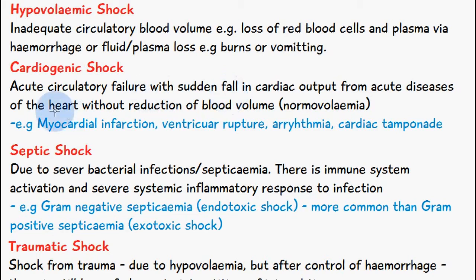Another type is cardiogenic shock, which is a form of acute circulatory failure with a sudden fall in cardiac output from acute diseases of the heart, without any reduction of blood volume. There is normal volemia, but an issue with the heart is reducing cardiac output. Examples include myocardial infarction, ventricular rupture, arrhythmia, and cardiac tamponade.